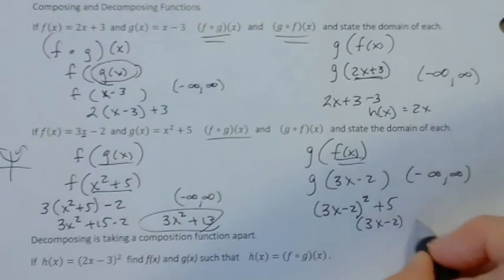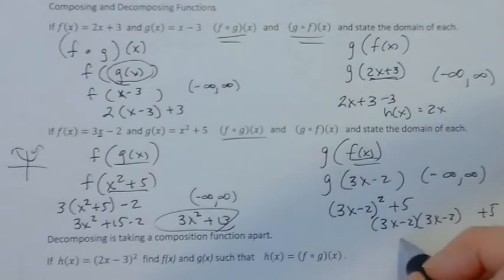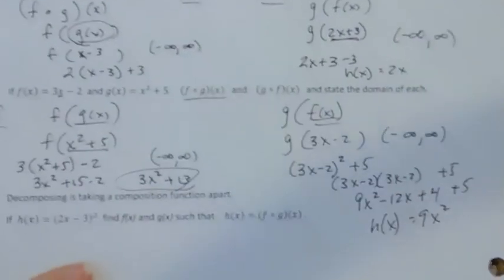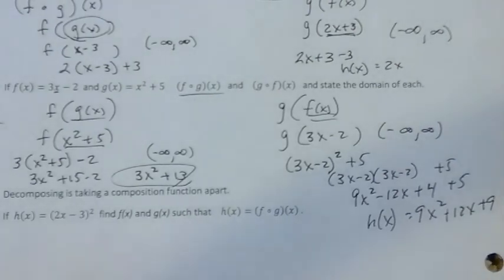So that would be (3x minus 2) times (3x minus 2) plus 5. This is 9x squared minus 12x plus 4 plus 5. So the new function would be 9x squared plus 12x plus 9. That's a quadratic, so the domain does not change.